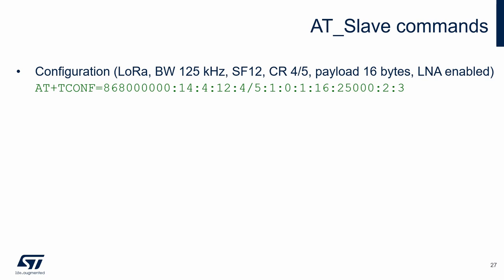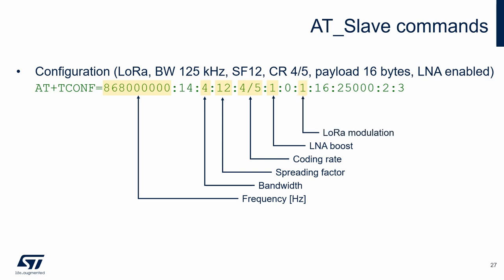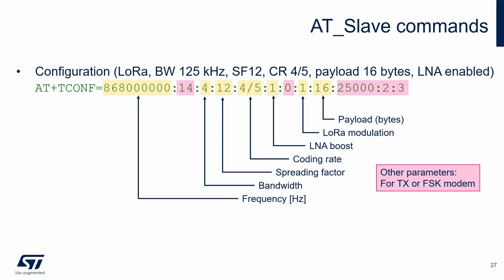For our test, we use LoRa modulation with the following settings. The AT configuration command includes parameters important for setting the LoRa receiver: frequency, modulation bandwidth, spreading factor, coding rate, LNA boost, selection of LoRa modulation, and payload. The rest of the parameters are used only for transmitter or FSK modulation. The reception of LoRa packets is enabled by the TRX command, where the parameter is the number of expected packets — in this case, 20 packets.